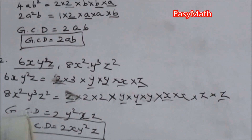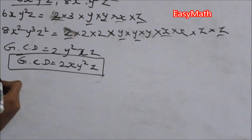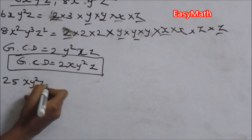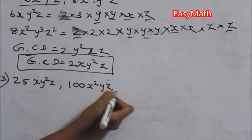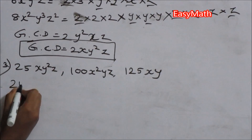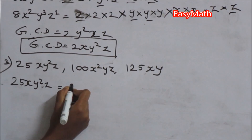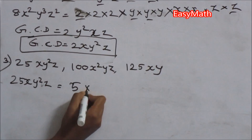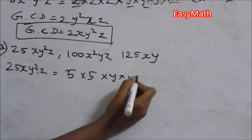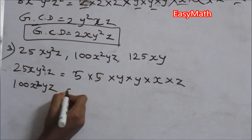One more problem: find the GCD of 25xy²z, 100x²yz, and 125xy. We expand 25xy²z: 25 is 5 × 5, the power of y is 2 so y × y, then x and z.